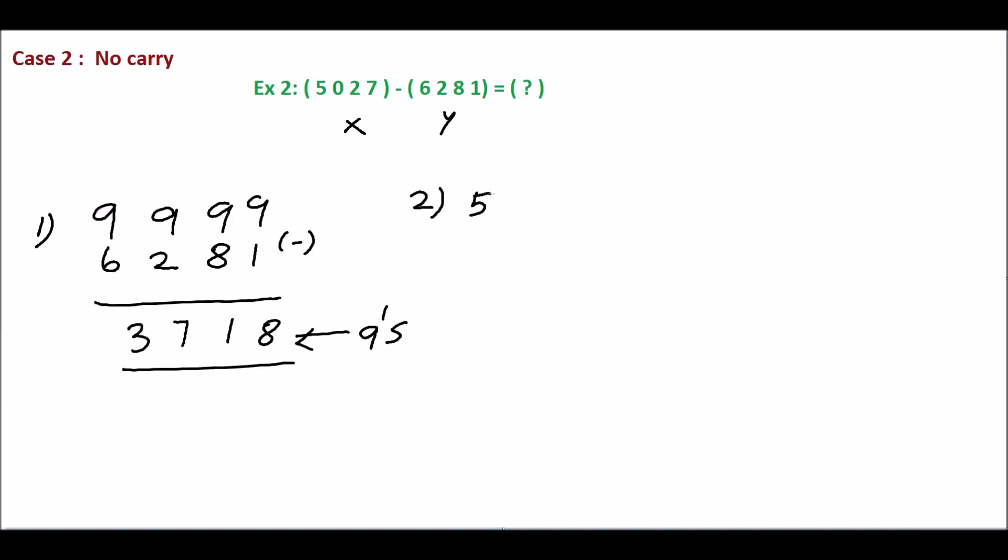add x and the 9's complement of y, which is 3718. 7 plus 8 is 15 with carry 1, 2 plus 1 plus 1 is 4, 0 plus 7 is 7, 5 plus 3 is 8, giving us 8745.